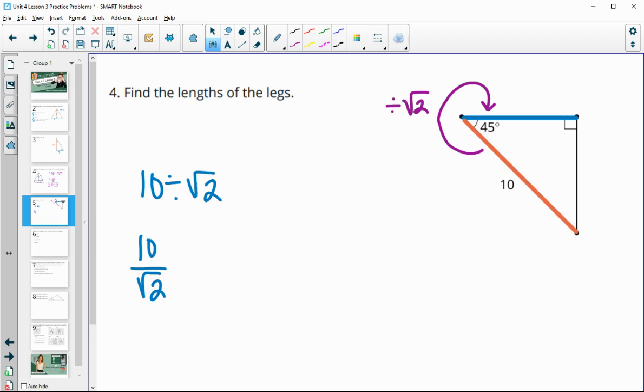So we'll multiply both top and bottom by the square root of 2. And that gets us 10 times the square root of 2 on the top. And then the square root of 4 on the bottom and the square root of 4 is just 2.